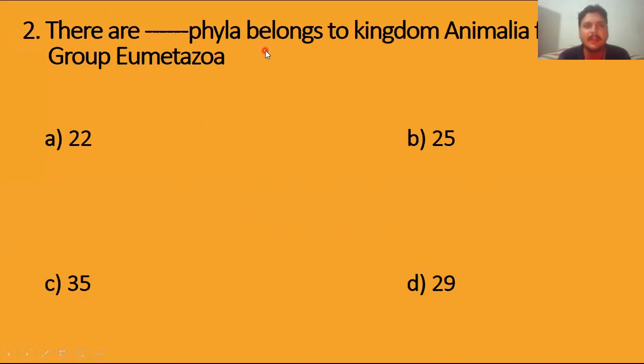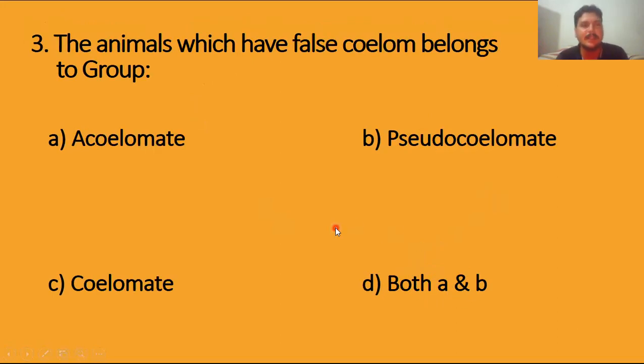These blank phyla belong to Kingdom Animalia and its group Eumetazoa. There are almost 29 phyla belonging to this kingdom. Option D is the right answer. The animals which are false coelom belong to group Pseudocoelomates. Option B is the right answer. False body cavity is present in Pseudocoelomates phylum Nematoda.